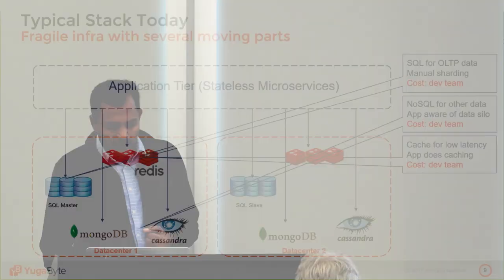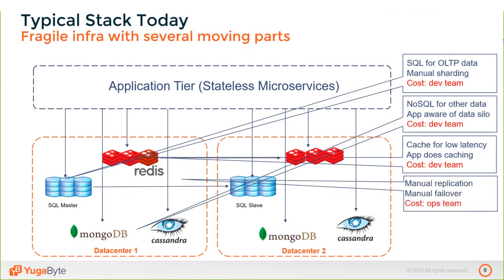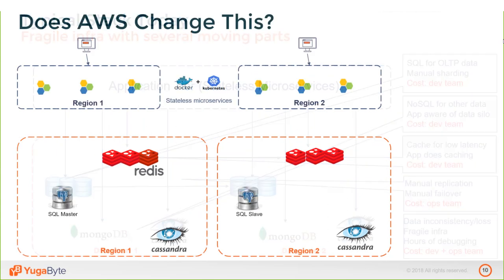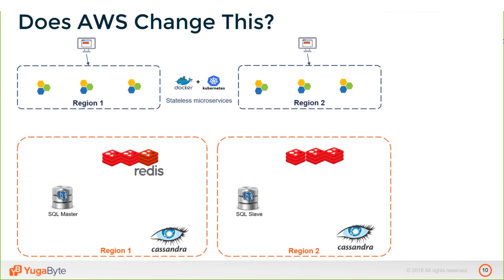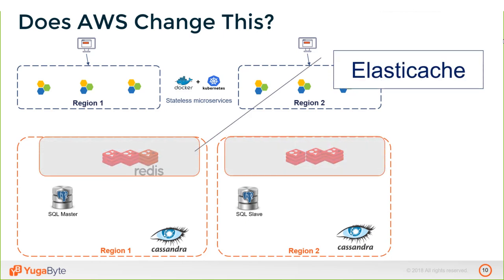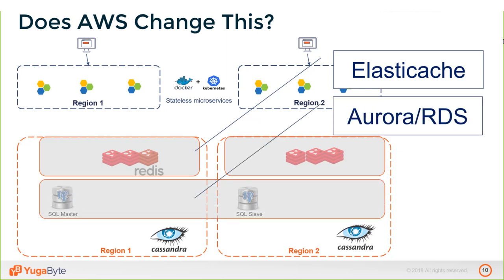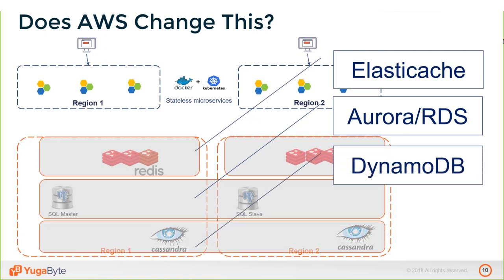The more moving parts you have in that mess, the further away you are from realizing the cloud-native potential. Innovation slows down and you can't ship products faster. Even moving to a public cloud like AWS doesn't fundamentally change the picture — Redis is offered as ElastiCache, traditional RDBMS as Aurora or RDS, and DynamoDB for elastic data requirements, but the app is still using multiple moving parts with logic to keep data consistent between tiers.